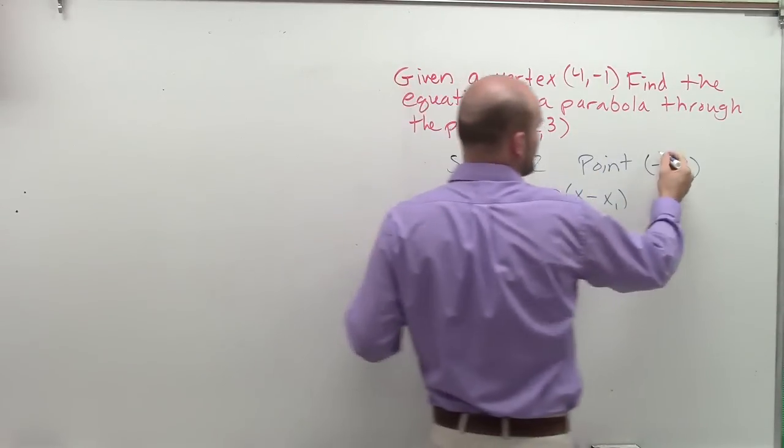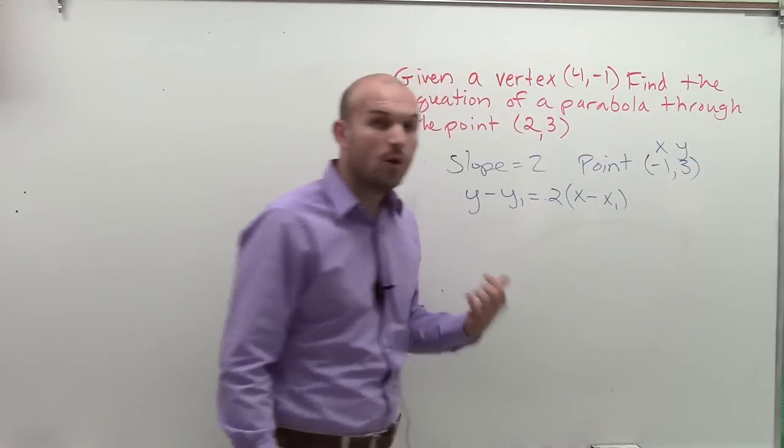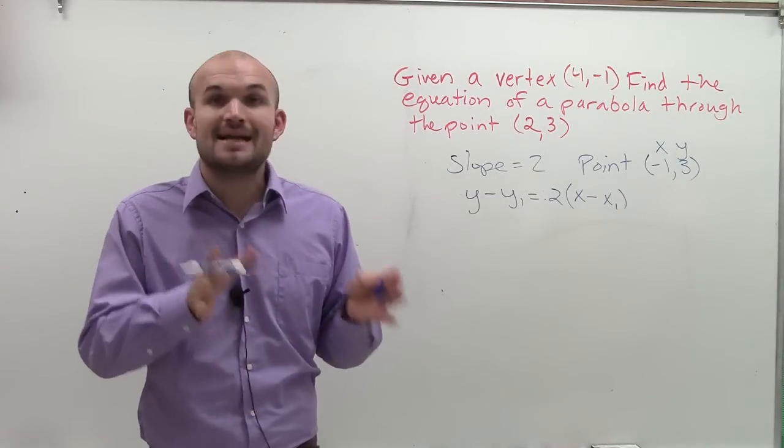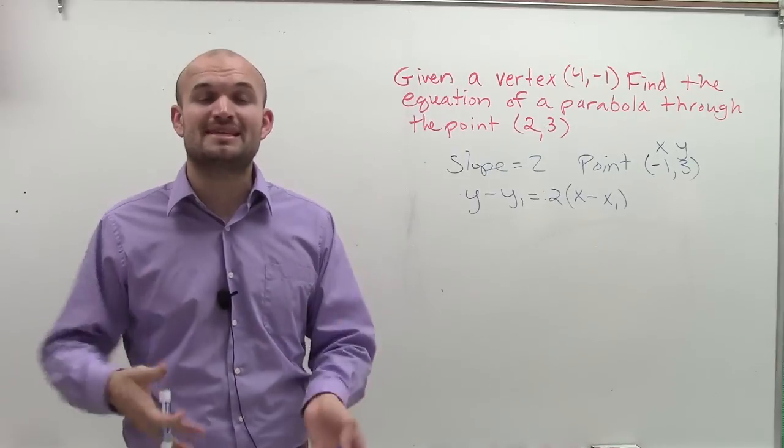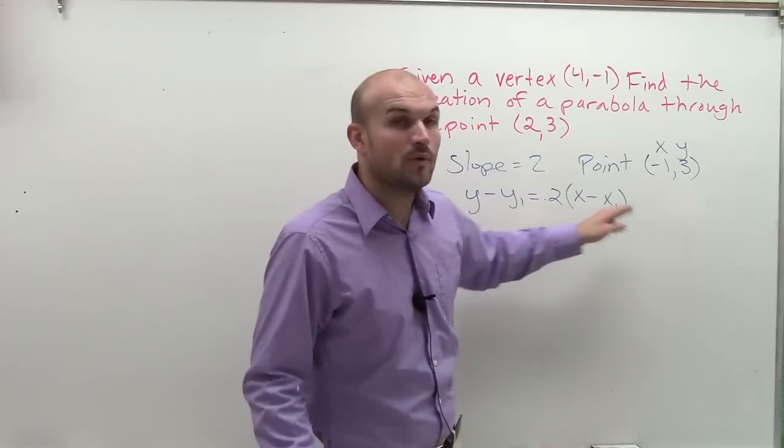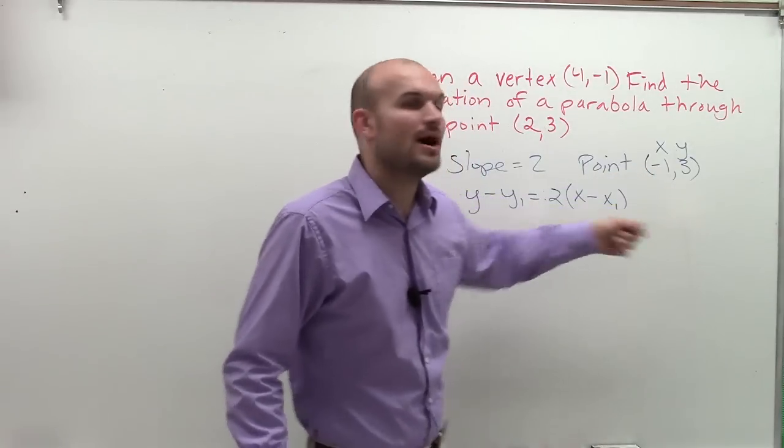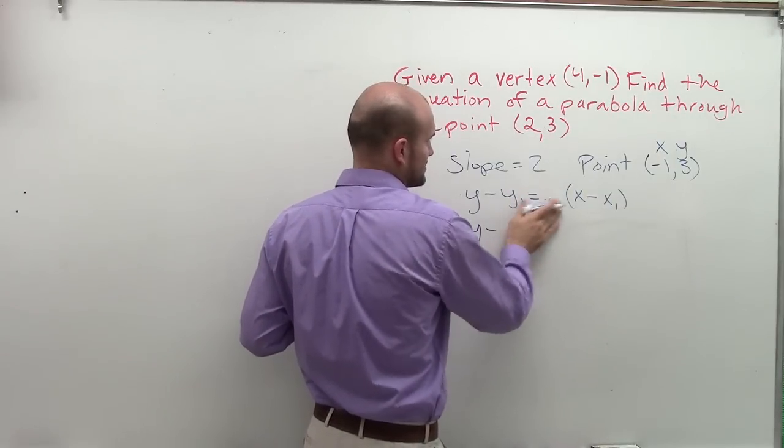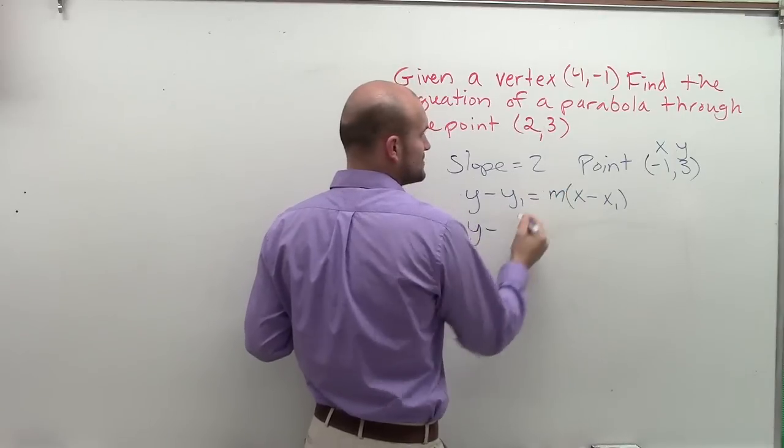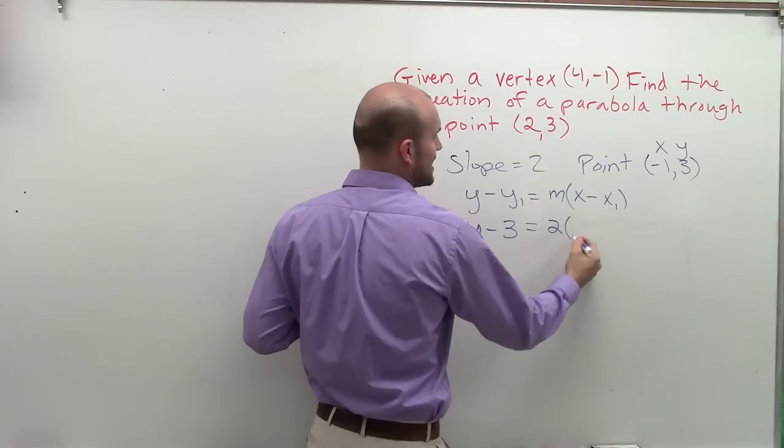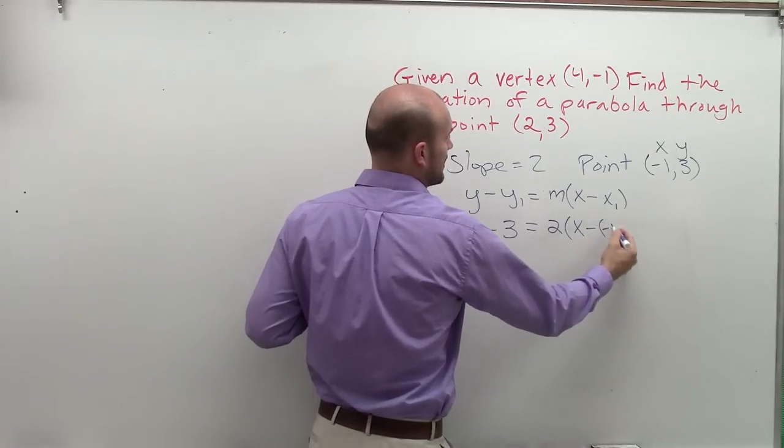And then we plug negative 1, 3 because remember, a point on a line is made up of infinitely many points. So if I'm given a point, I can plug that in for x and y. In point slope form, I'm going to plug my x and y in for x1 and y1. So I write y minus 3 equals 2 times x minus negative 1.